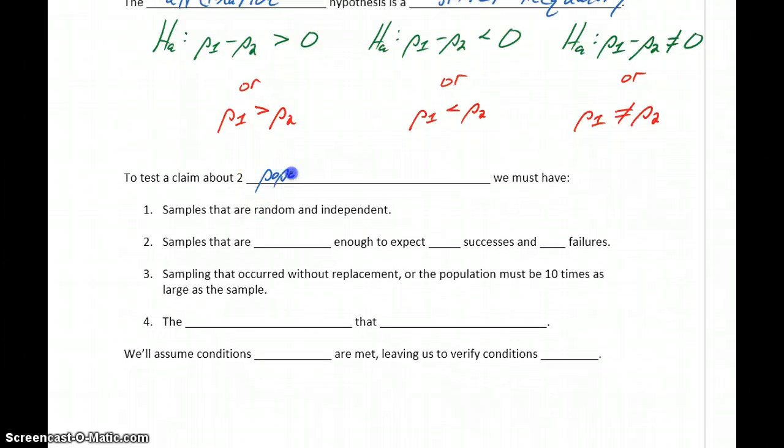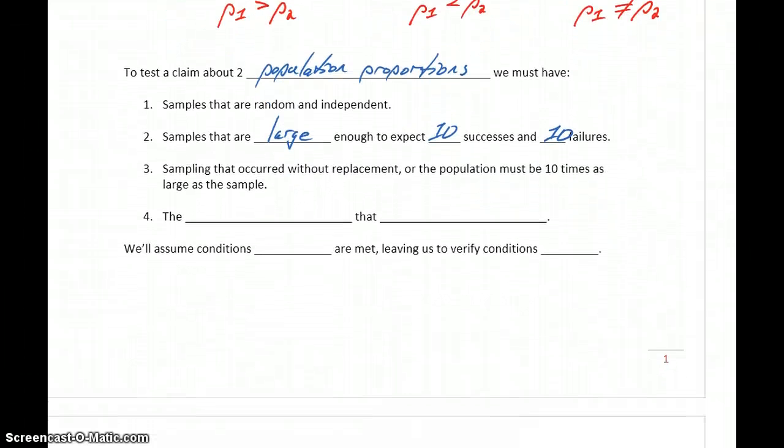So to test a claim about two population proportions, we still have conditions we need to verify that will be similar to the conditions we verified for a one sample test. We still need samples that are random and independent. Samples that are large enough to expect 10 successes and 10 failures. Sampling that occurred without replacement or a population that's 10 times larger than our sample.